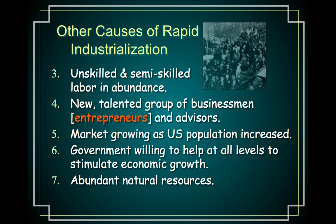Other causes of rapid industrialization include a huge skilled, unskilled, and semi-skilled labor force in the United States who could work factory lines. There was also a new talented group of businessmen and entrepreneurs, which we'll study later this week. The market was growing as the US population increased — remember, at this time the United States was a pretty young country, with an average age of around 25 to 28, with lots of young folks moving west and settling down.